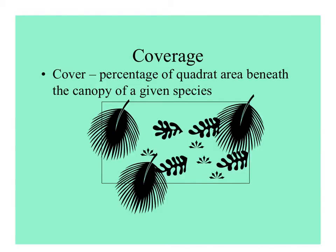In a quadrat, shown here in this rectangle, you can measure coverage of a species. Even if the base of a plant is outside the quadrat, if its leaves cover within it, you might use that in your measure of coverage. Things with bigger leaves have greater coverage than small plants with tiny leaves.